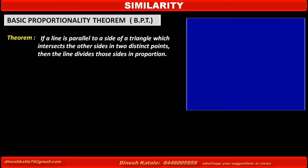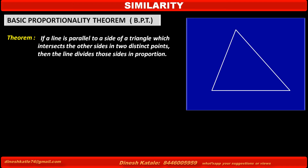According to this theorem, first we have to draw one triangle. Consider this triangle drawn on the board with vertices P, Q, and R. Line L is drawn here such that it is parallel to side QR of triangle PQR. It intersects the other two sides of this triangle at two distinct points — side PQ at point M and side PR at point N.